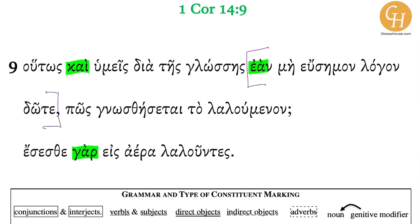I'll go ahead and close that off. So whenever I see subordinating conjunctions, I can typically start by putting a bracket — you bracket off subordinate clauses. This is all about navigating the sentence: you're trying to figure out what goes with what, what's the main clause, what's the main verb, and if there's an expressed subject, what's the subject of that.